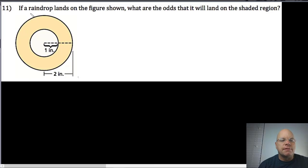The hardest part about problem 11 is understanding that it's not asking for probabilities, it's asking for an answer in terms of odds. So it says if a raindrop lands on the figure shown below, what are the odds that it will land on the shaded region?